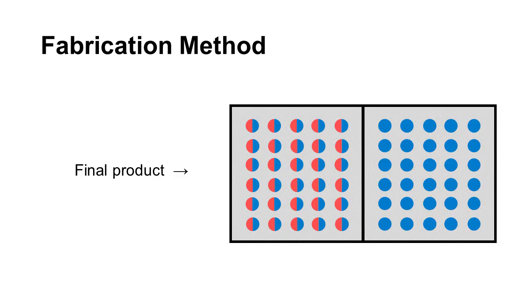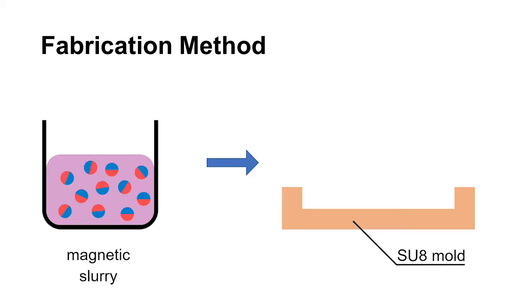Fabrication method: This fabrication method allows 3D encoding of magnetic domains in planar composites. As an example, let us consider this final product which has two magnetic domains. First, we fuse a 150-micrometer-thick SU8 mold with a magnetic slurry.